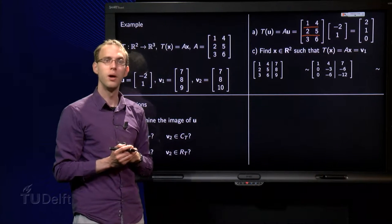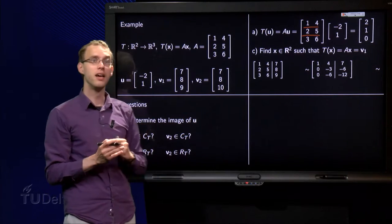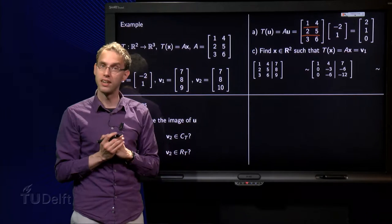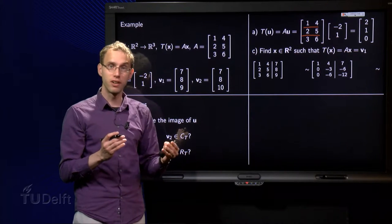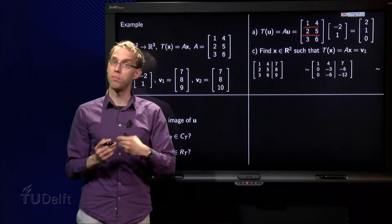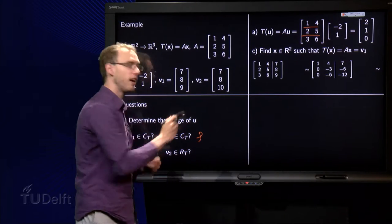Question B: Well it is very easy, we can answer them straight away. The codomain of T is R^3, that means that all vectors with three components are in the codomain of T. Since v1 and v2 both have three components, they are both in the codomain.